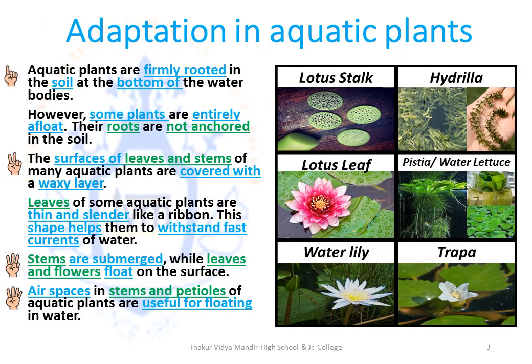Adaptations that take place in aquatic plants: Aquatic plants are usually firmly rooted in the soil at the bottom of the water bodies. However, there are some plants that are entirely afloat, meaning their roots are not anchored in the soil. The surfaces of leaves and stems of many aquatic plants are covered with a waxy layer so that they don't get rotten in the water. Leaves of some aquatic plants are thin and slender like a ribbon, so they bend easily with fast water current and do not provide a lot of resistance, helping them withstand fast currents.